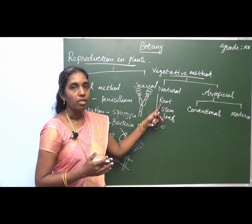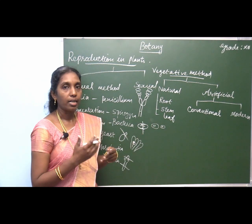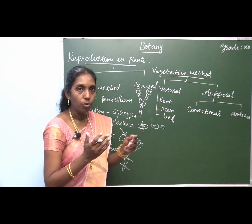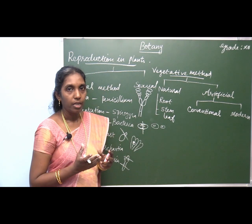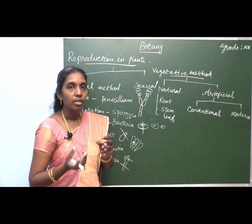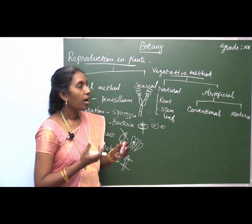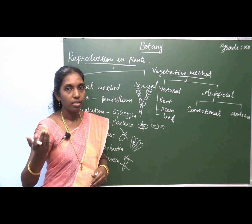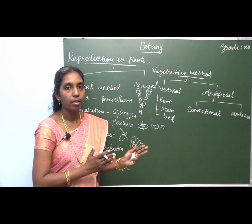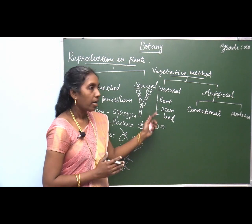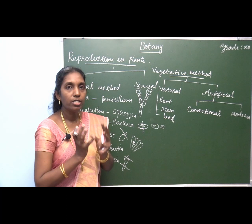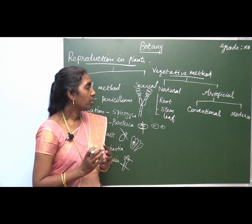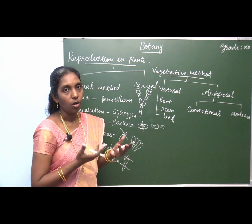For example, from the root of Murraya — commonly known as curry leaf — a bud develops from the root, and this bud is able to develop into a new species when it is detached from the parental plant. Likewise, in dahlia, adventitious buds develop in the root and these adventitious buds develop into the entire organism.